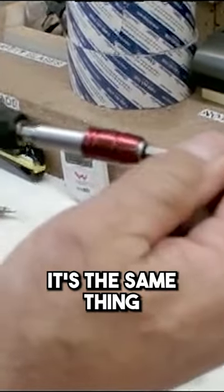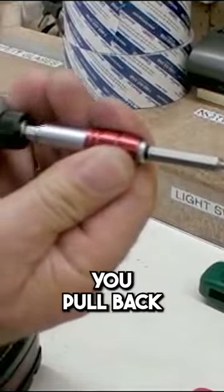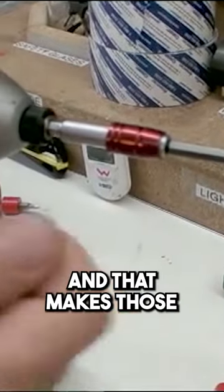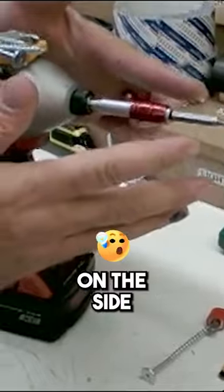To push it in, it's the same thing. It's one motion. If you want to get it super tight, you pull back on the collar just a little bit and that makes those ball bearings actually bear down on the side.